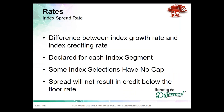A spread rate is a newer index tool in indexed universal life. A spread rate is the difference between the index growth rate and the index crediting rate. For example, if the spread were 5% and the index went up 10%, you subtract the 5% spread and get a 5% credit. If the index went up 25%, you subtract the 5% spread and get a 20% credit. This is declared in advance for each segment.